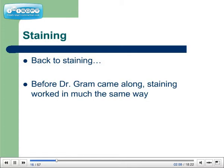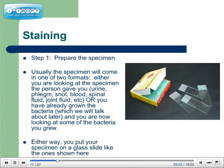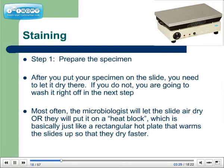Before Dr. Gram came along, staining worked much in the same way. Step 1: Prepare the specimen. Usually the specimen will come in one of two formats. Either you are looking at the specimen the person gave you — urine, phlegm, snot, blood, spinal fluid, joint fluid, etc. — or you will have already grown the bacteria, which we'll talk about later, and you are now looking at some of the bacteria you grew. Either way, you put your specimen on a glass slide. After you put your specimen on the slide, you need to let it dry there. If you do not, you're going to wash it right off in the next step.